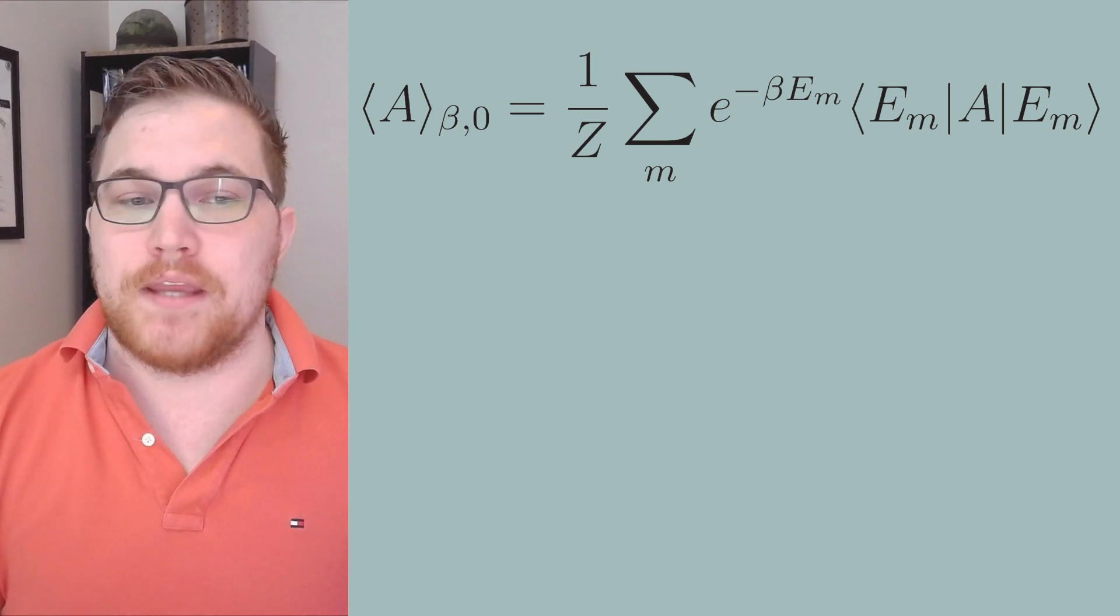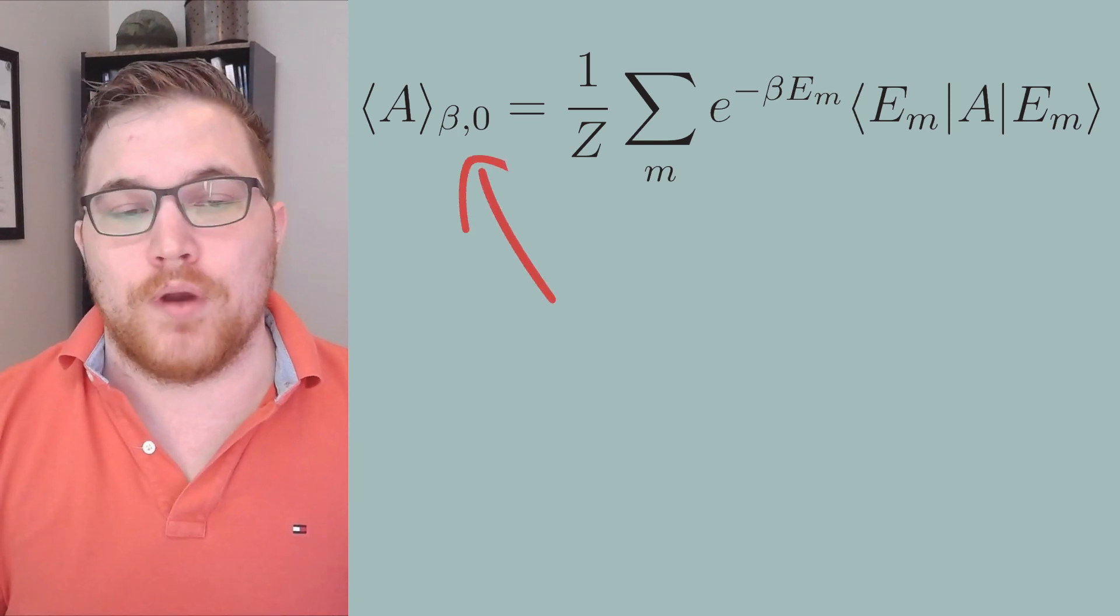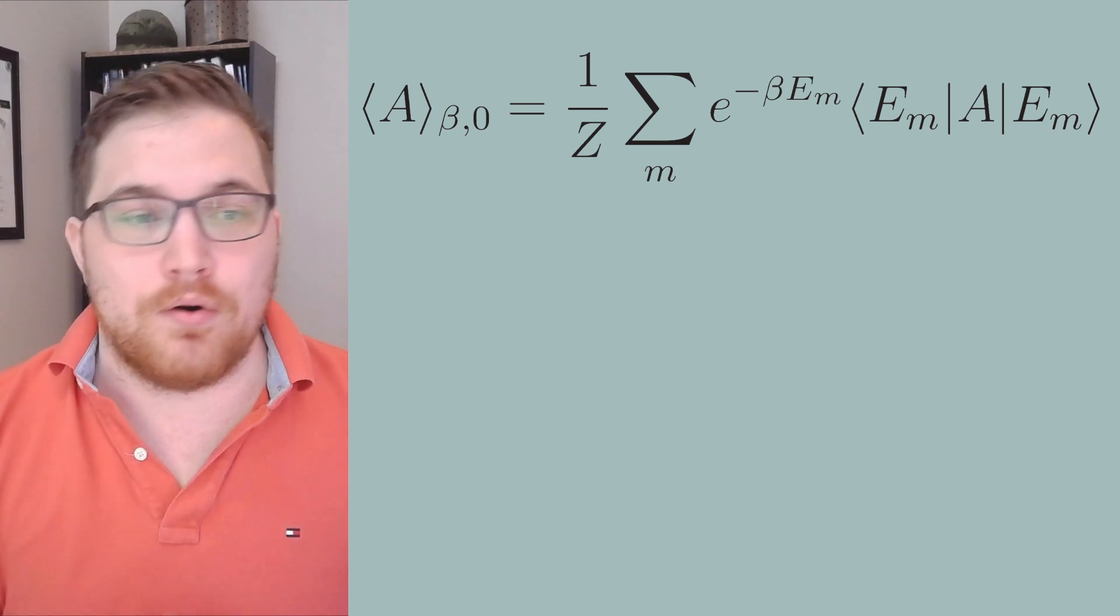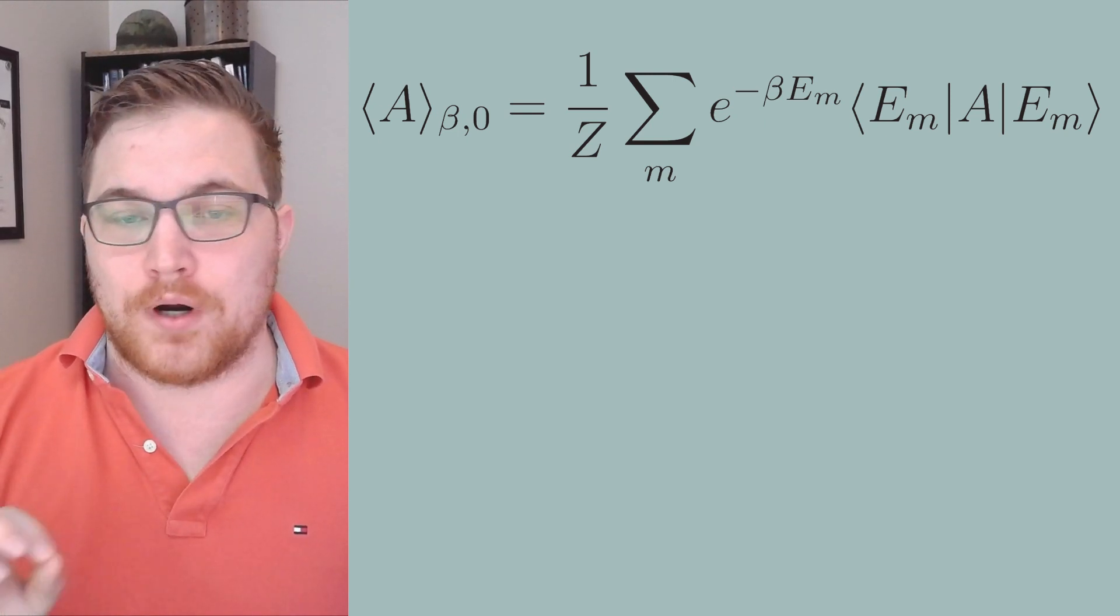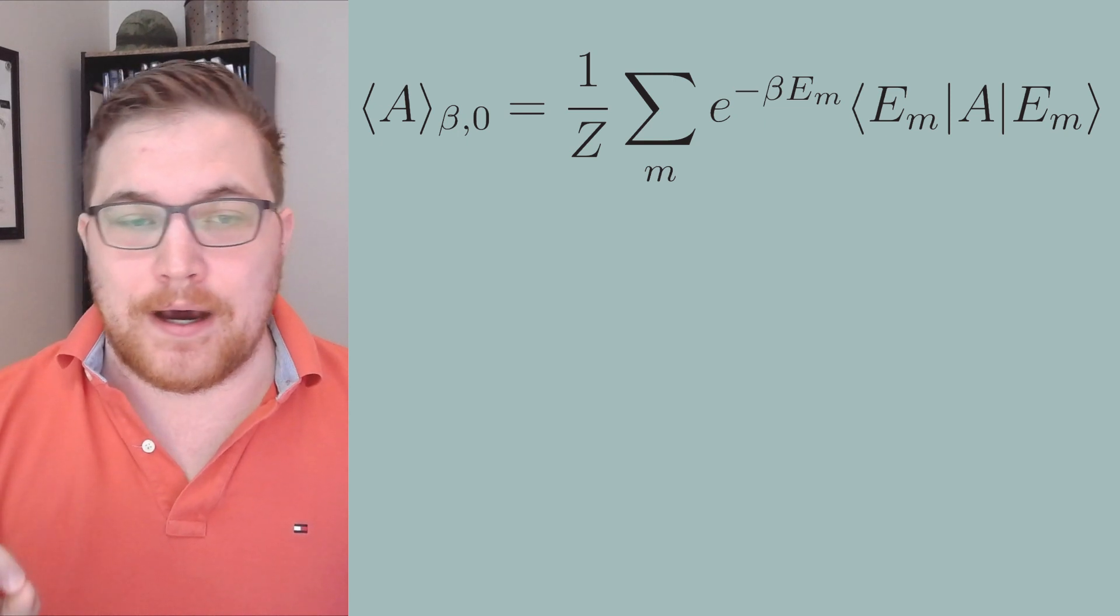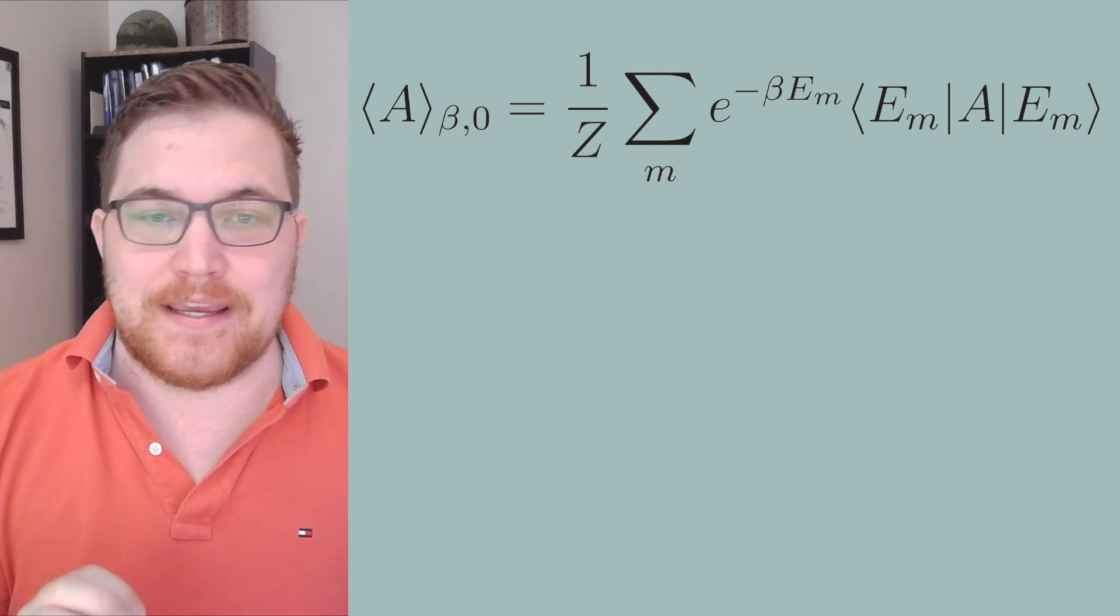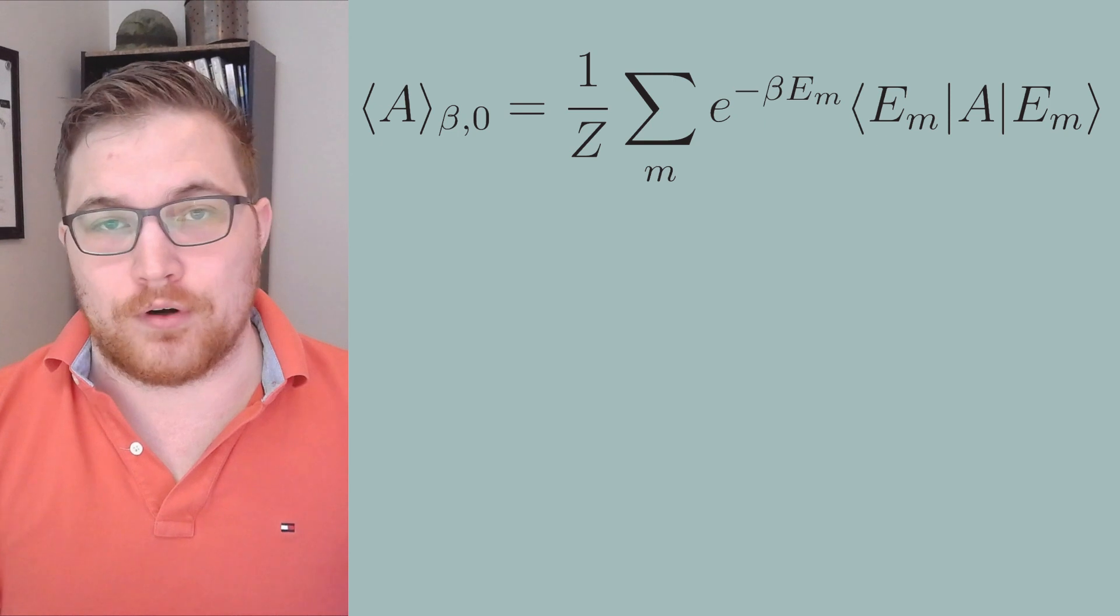Here I'm going to write the expectation value with two subscripts, beta and zero, indicating that it is a thermal average with respect to our Hamiltonian H-naught, and that thermal average is taken at the inverse temperature beta.